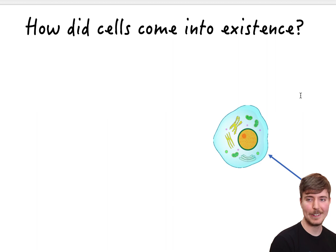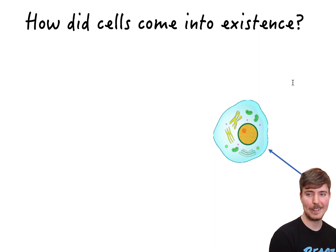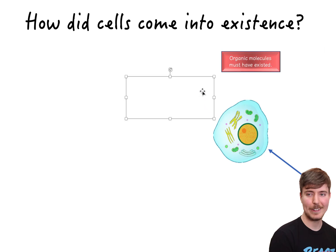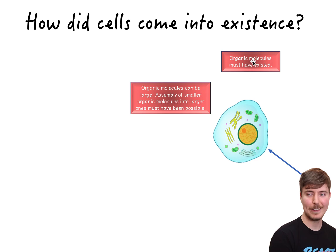We can't know exactly how the first cell appeared, but we do know that certain things must have existed for cells to form. These include organic molecules — which you'll learn more about in IB biology — basically large molecules including proteins, fats, nucleic acids such as DNA, and carbohydrates. Because cells are made up of organic molecules, these must have existed in the environment before cells came along.